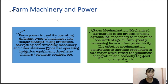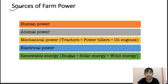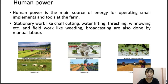Now let's look at the sources of farm power. It is very important to know where this power comes from so we can incorporate it into agriculture practices. The first form of farm power is human power, the second is animal power, the third is mechanical power, the fourth is electrical power, and the last is renewable energy.